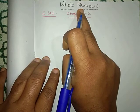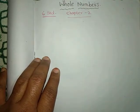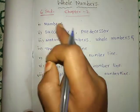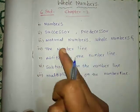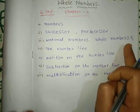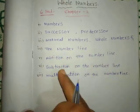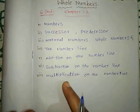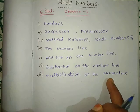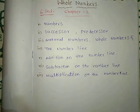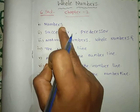We will start with the first class. Topics include: successor, predecessor, natural numbers, whole numbers, and the number line, addition and the number line, subtraction and the number line, and multiplication and the number line. The first topic is numbers — introduction of numbers.